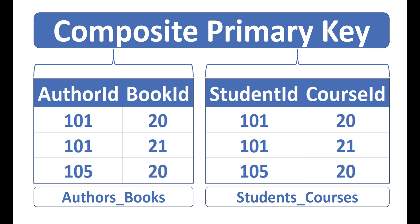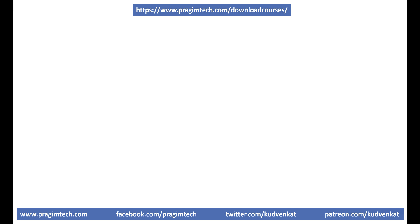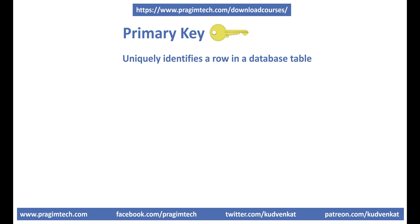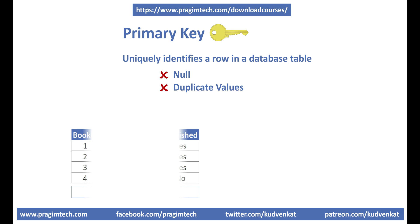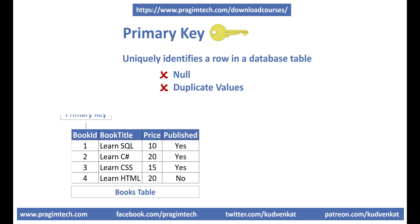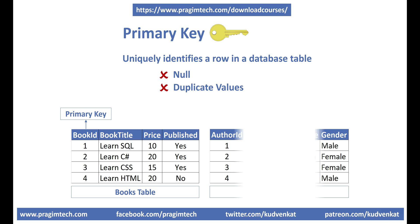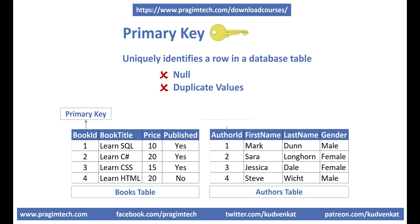Before that, let's quickly understand what is a primary key. A primary key uniquely identifies a row in a table. You cannot store null or duplicate values in a primary key column. In the books table, book id column is the primary key. Similarly, in the authors table, author id is the primary key.